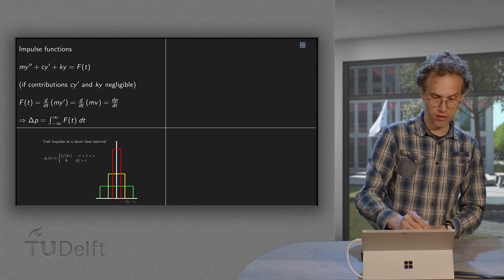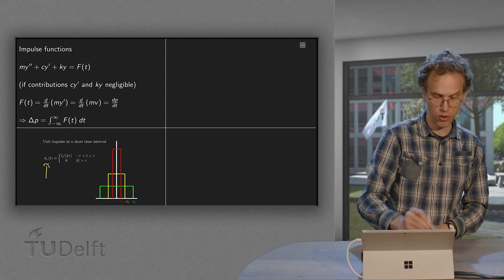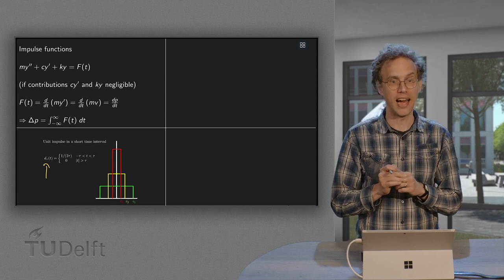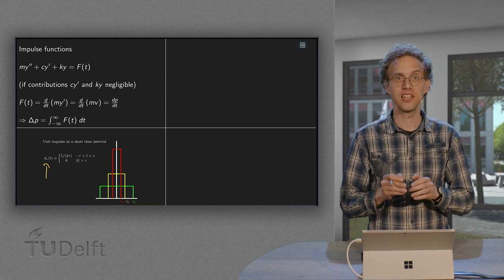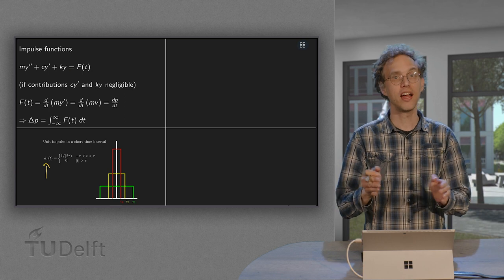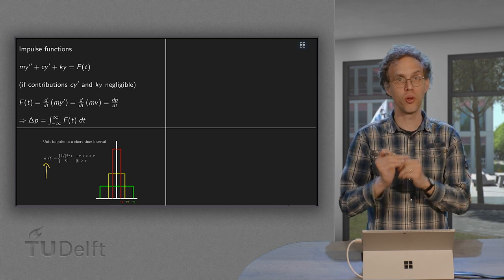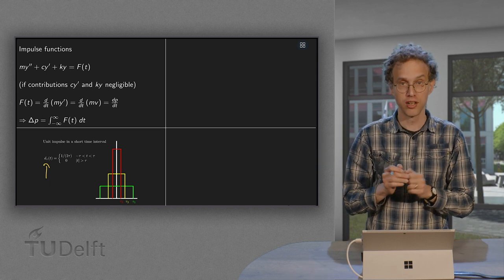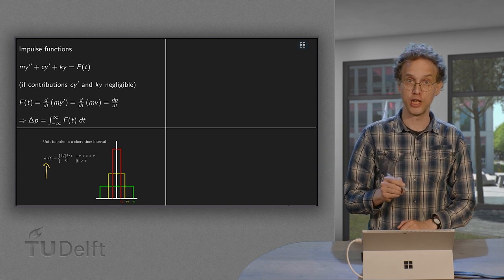We introduce the function d_τ(t), where τ is some constant. Well, the idea is that it's zero everywhere except between minus τ and plus τ, and that's constant. And a constant such that the total area under the curve is one.